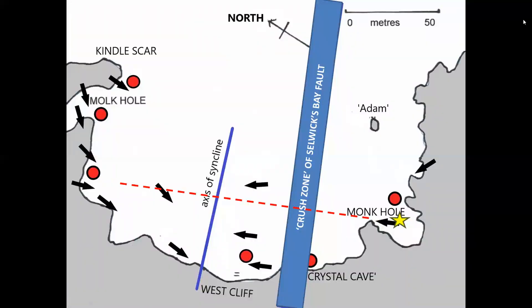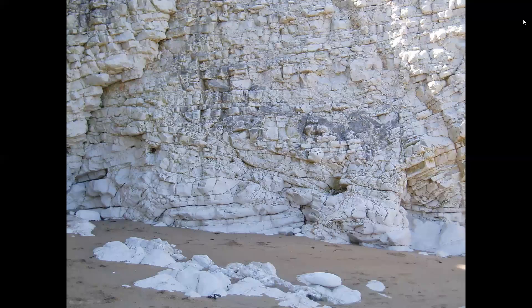On a falling tide, we're crossing the wave cut platform, which may still be very slippery, and the Selex Bay shatter zone to the northern side of the inlet, on our way to examine sedimentary structures and small faults in Molk Hole. On the northern wall of Selex Bay, and on our way to Molk Hole, we can see the complexity of the deformation here.